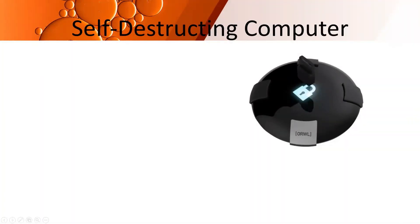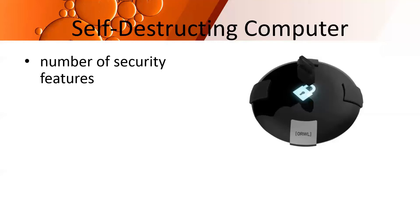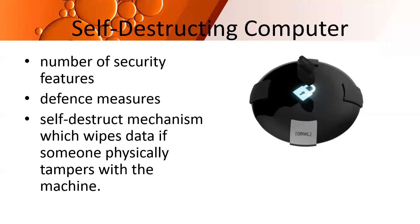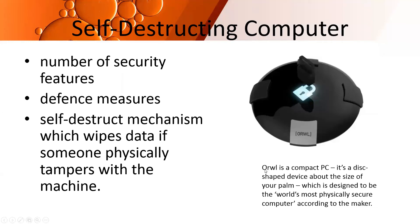Apart from this, there are self-destructing computers — computers with high security features that self-destruct if tampered with. They have a self-destruct mechanism that wipes data if someone physically tampers with the machine. One such device is ORWL (O-R-W-L), a compact, disk-shaped PC about the size of your palm, designed to be the world's most physically secure computer. You can attach a monitor and peripheral devices like printer, mouse, and keyboard through its USB ports.